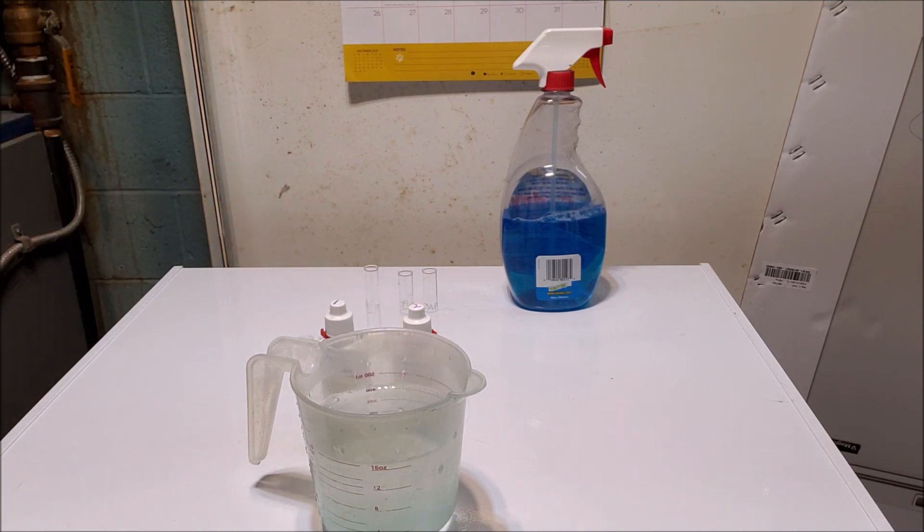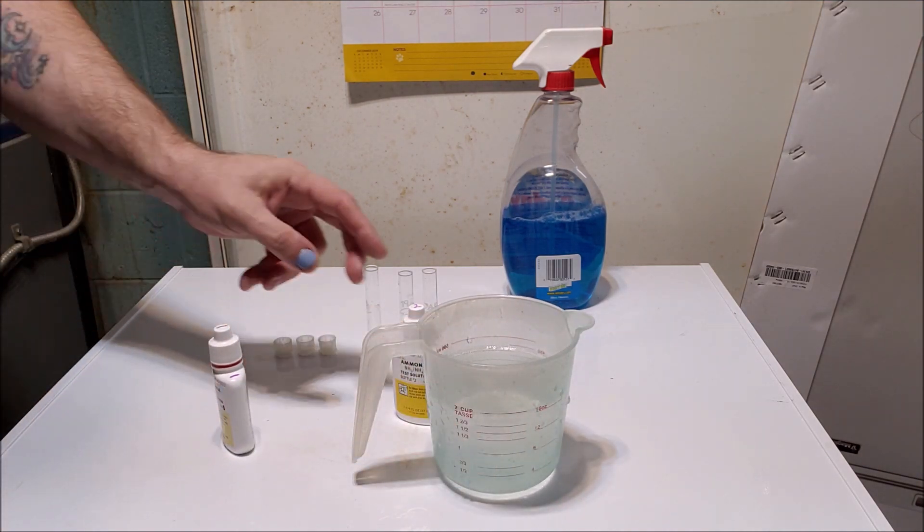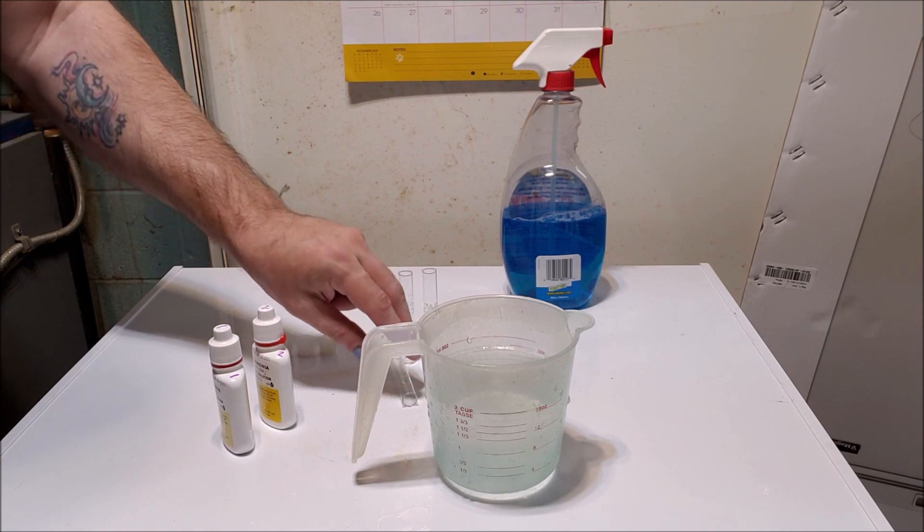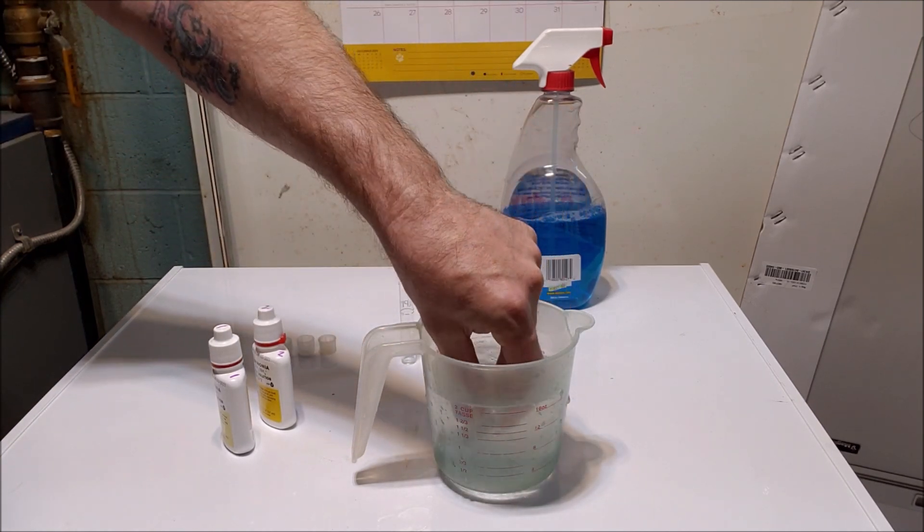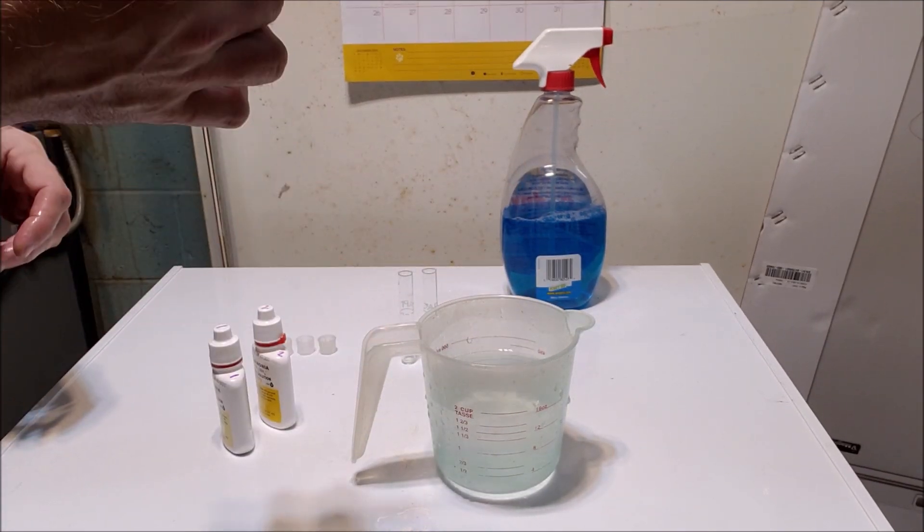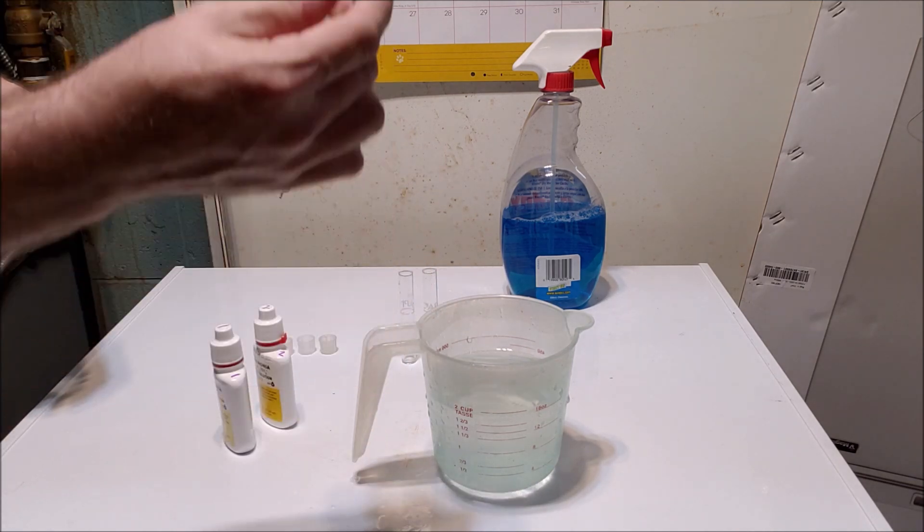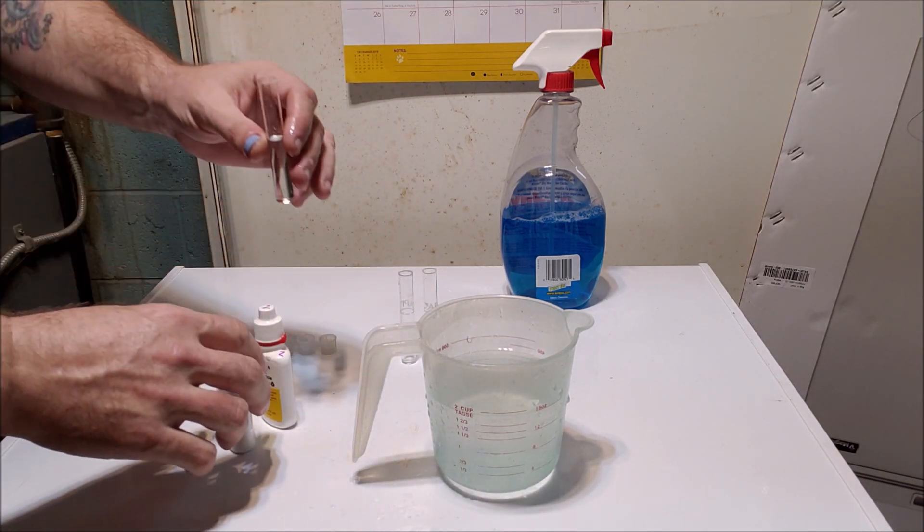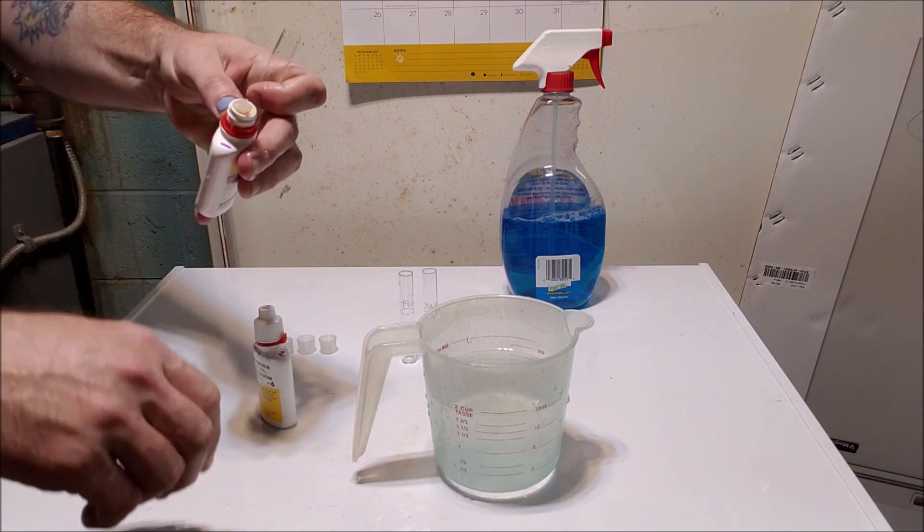What we're going to do is we're going to set the tests up three different ways and we're going to see if the colors come out the same way every time. So first of all, we are going to do exactly the way the instructions say, and that is we're going to put eight drops of bottle number one.